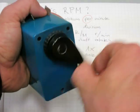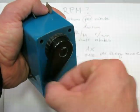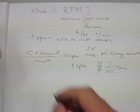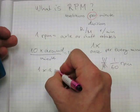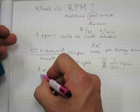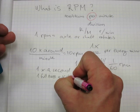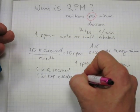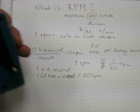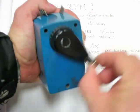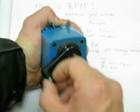Or if I rotate it very fast — about once every second — I've reached 60 RPM. One full turn per second equals 60 RPM, because I've rotated 60 times in a minute. So there's 60 RPM: 60 revolutions per minute.